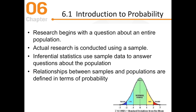All research usually begins with a question about an entire population, but we can't usually get a hold of an entire population, so we usually work with samples. They're smaller, cheaper, and more accessible. Population is incredibly hard to work with, but samples are definitely a lot more doable. Inferential statistics uses what we learned from that sample, and we try to refer that back to the greater population. There is a relationship between sample and populations as defined in terms of probability.